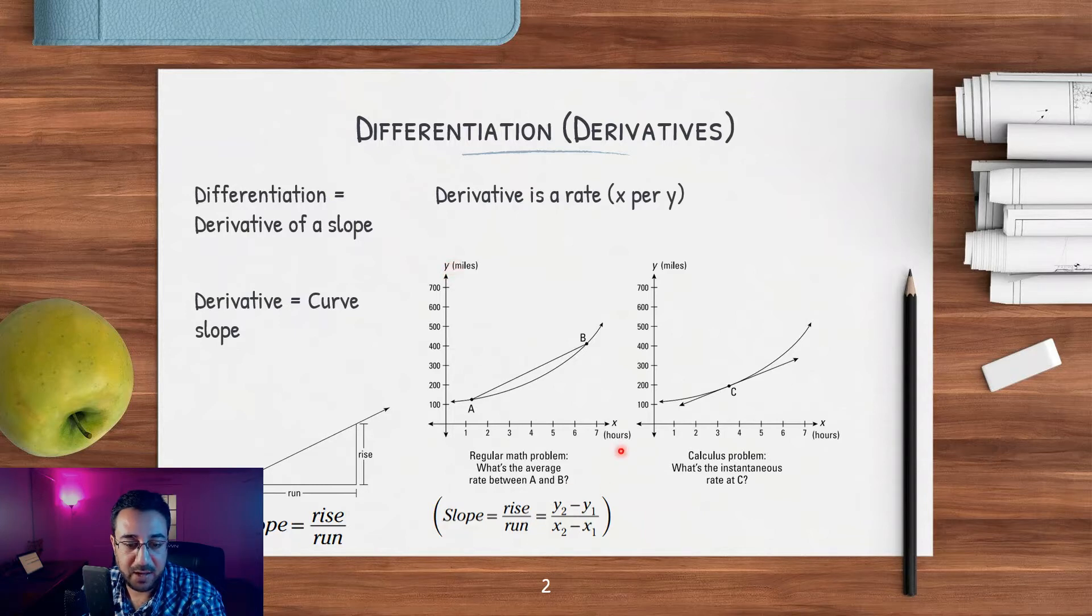...a graph for miles per hour, so x-axis representing hours and y-axis representing miles. In this case you have a certain curve. The problem is you have point A that you know its x and y numerals, and you have point B. Let's say in this case point B is at 7 and 400, and A is at 1.5 and 100. The regular math problem would tell you what is the average rate between A and B.